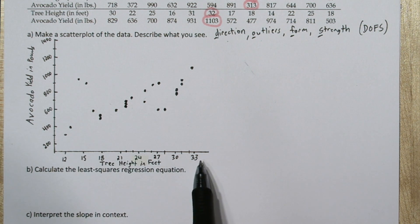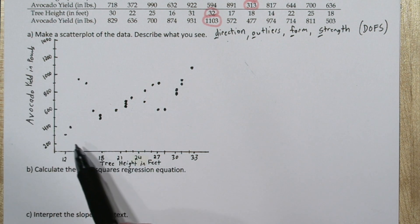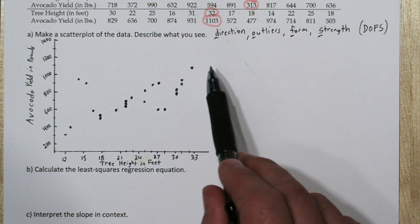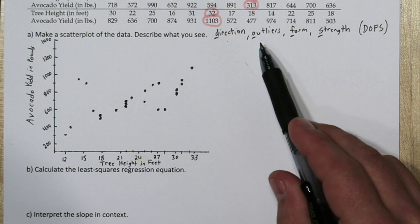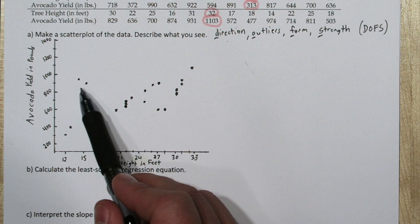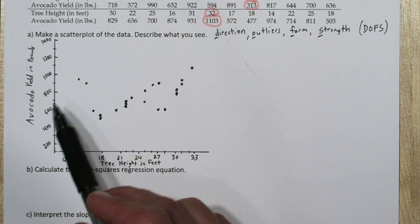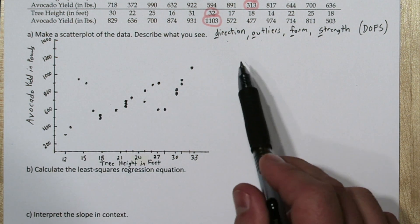We can see as tree height increases, our avocado yield tends to increase. So our direction is positive. Now as far as outliers, we do have these few points right here. They don't fit with the rest of the trend I'm seeing here.